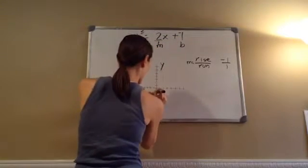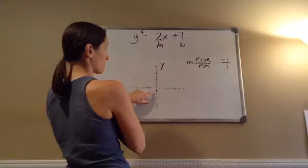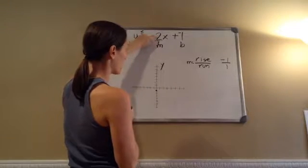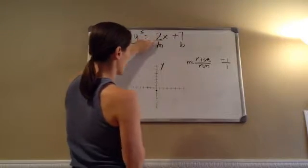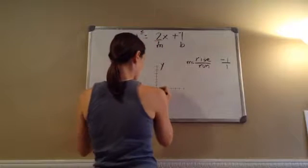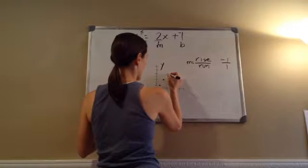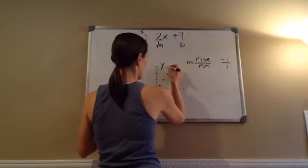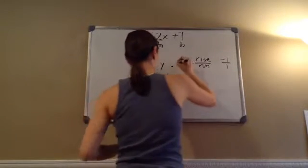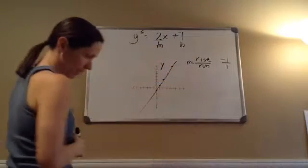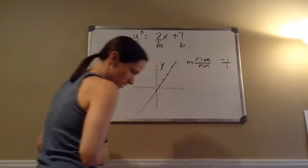Negative 1. Got it? Now I'm going to go up 2 over 1 repeatedly, and that's going to make that line right there.